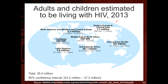This slide shows the number of adults and children estimated to be living with HIV worldwide by region in 2013. Most people with HIV are in sub-Saharan Africa, with 24.7 million adults and children, out of a global total of approximately 35 million in 2013.